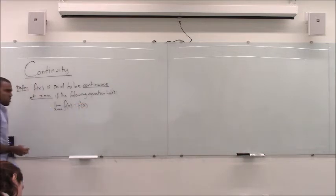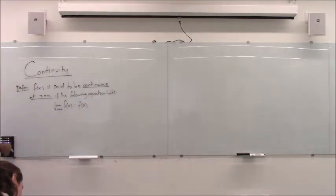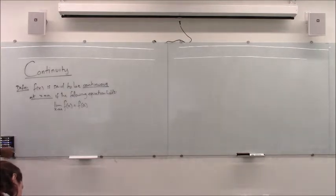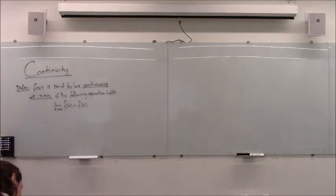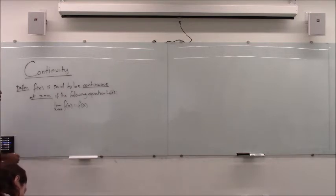I wrote that down before but quickly ran over it — now we're officially looking at this. That is what continuity means: if the limit as x approaches a of f of x is equal to the output of the function at that point, we say that the function is continuous at that point.